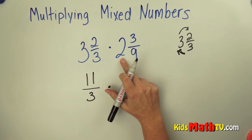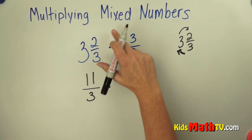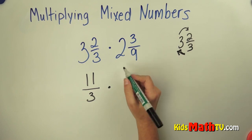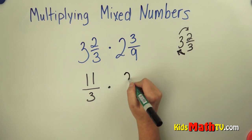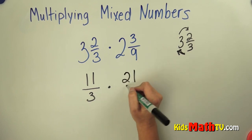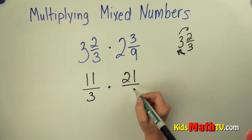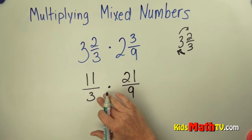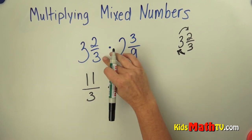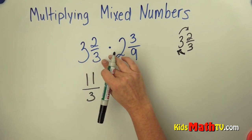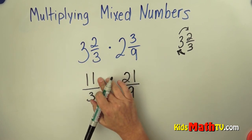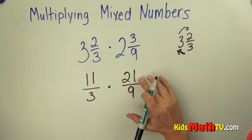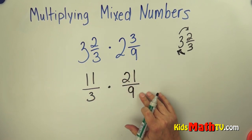Then we do the same thing for the second mixed number. 9 times 2 is 18, and 18 plus 3 more is 21 over the denominator 9. So we've renamed 3 and 2 thirds into 11 thirds, and 2 and 3 ninths into 21 over 9.